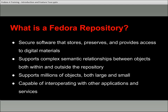Along with that, it's about supporting complex semantic relationships between objects — not just within the repository, which was quite common in Fedora 3, but also outside of the repository. Scalability is important here as well. The repository needs to be able to support millions and potentially more objects, both large and small. Interoperability has always been a core tenet of Fedora — it's very important to think about how Fedora repositories will play a role in the broader repository community.